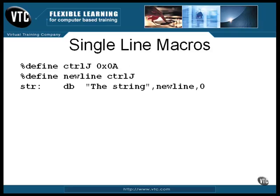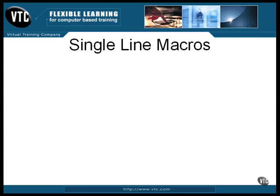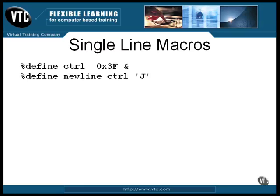In this example, one macro is substituted inside another, but the end result is the same. A control character is simply a regular character with the first two bits set to zero. Control J turns out to be the value 10.